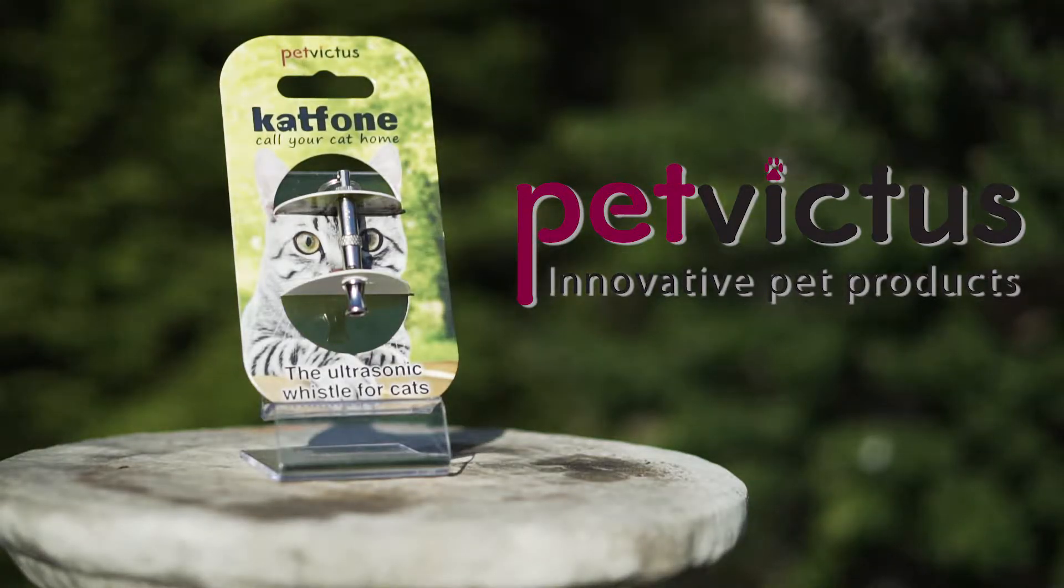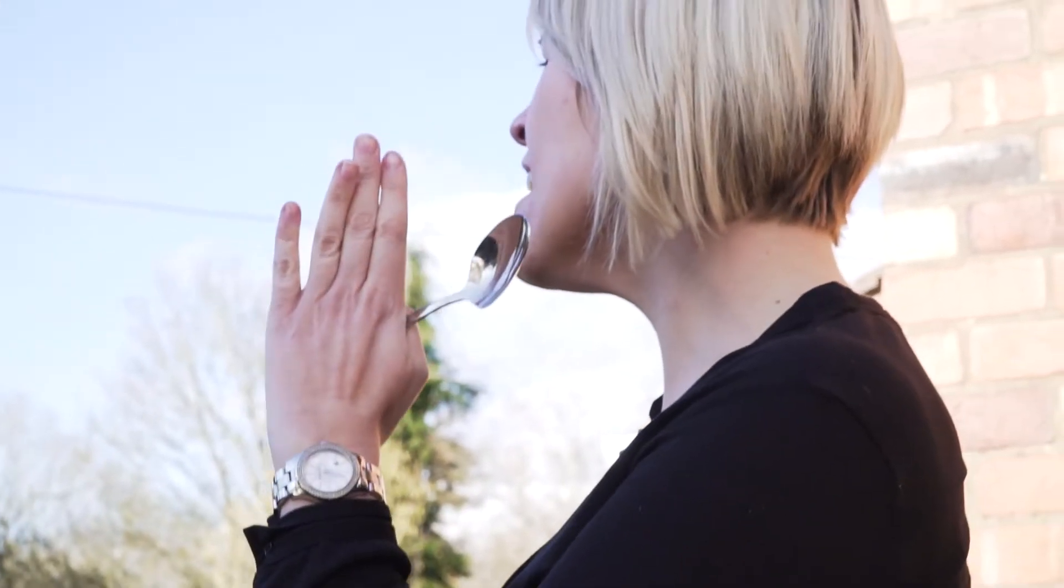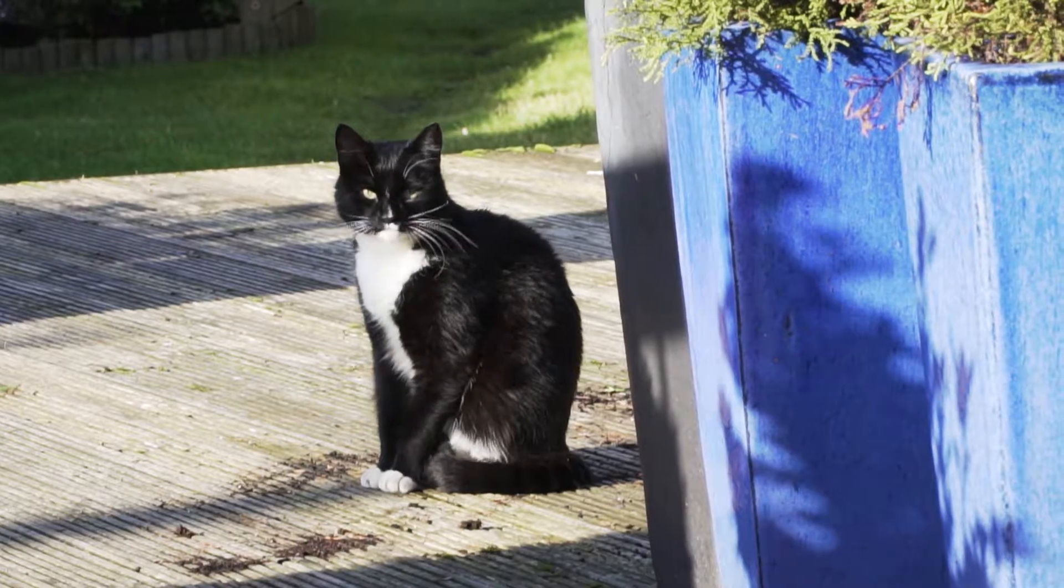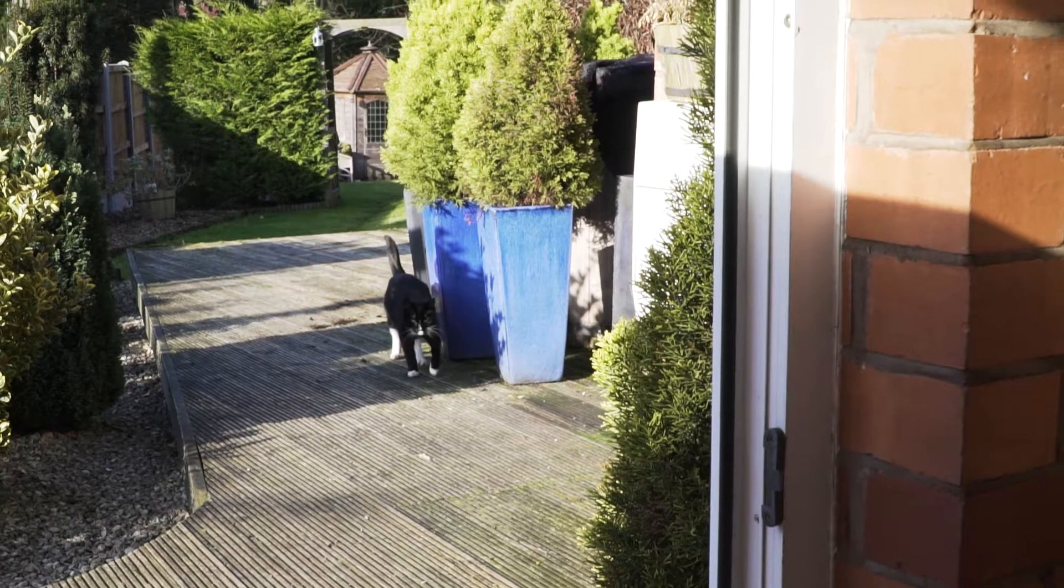CatPhone is the ultrasonic whistle for cats. How do you call your cat home? CatPhone can be heard by your cat from up to a mile away. Using ultrasonic sound, it gives your cat a clear message that it's time to come home.